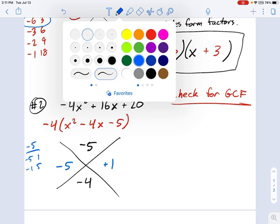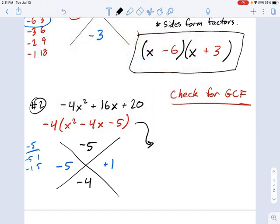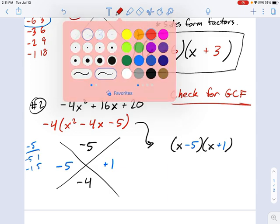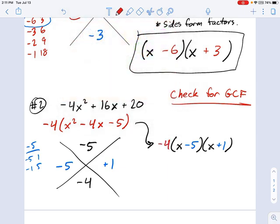So the factored form of this polynomial is simply X here. There's another X there. And let's get those side terms. Minus 5 and plus 1. And don't forget that negative 4 from the beginning. So here we go. That's our fully factored form.